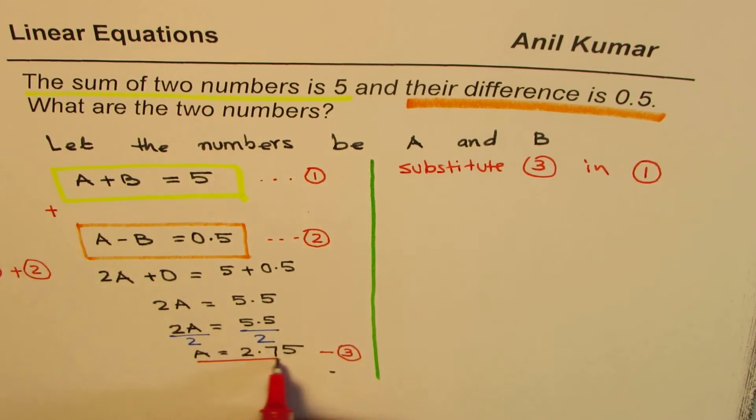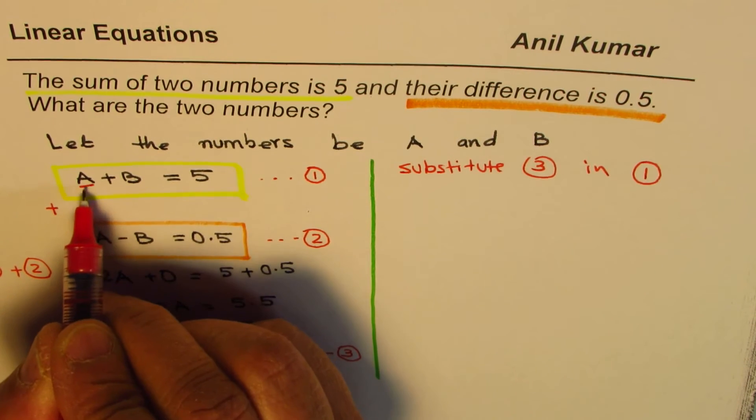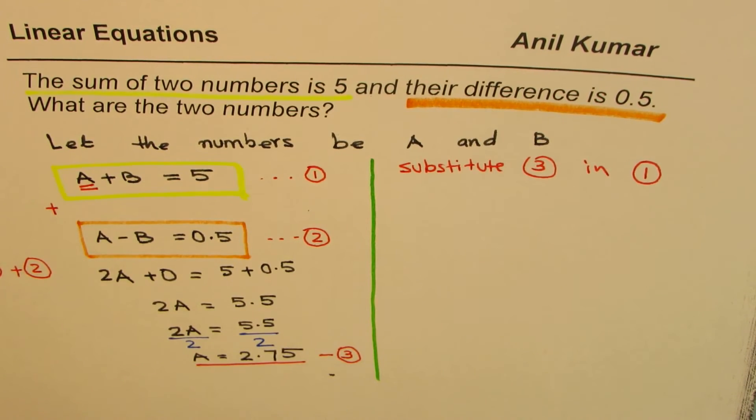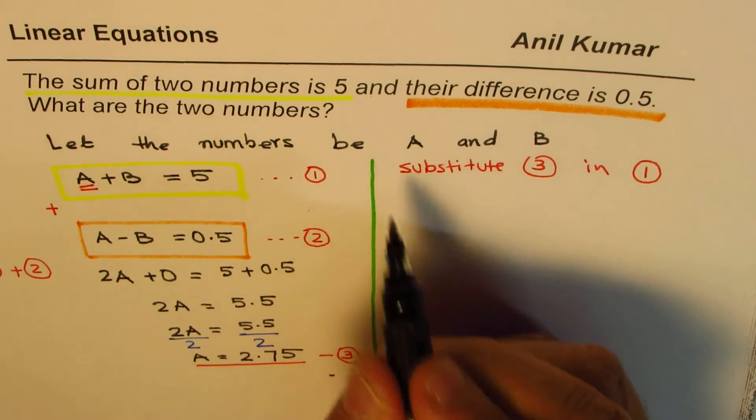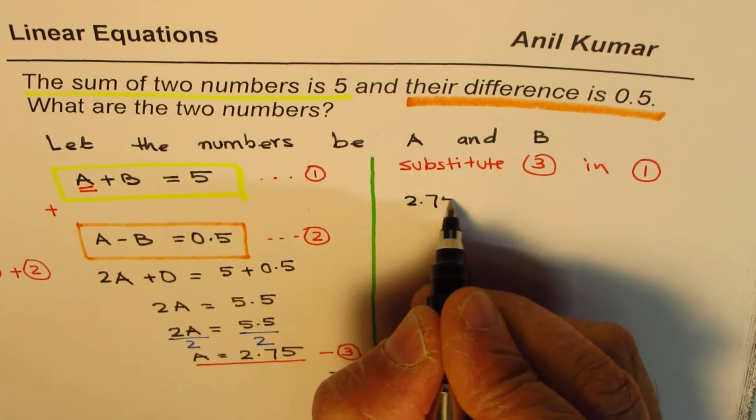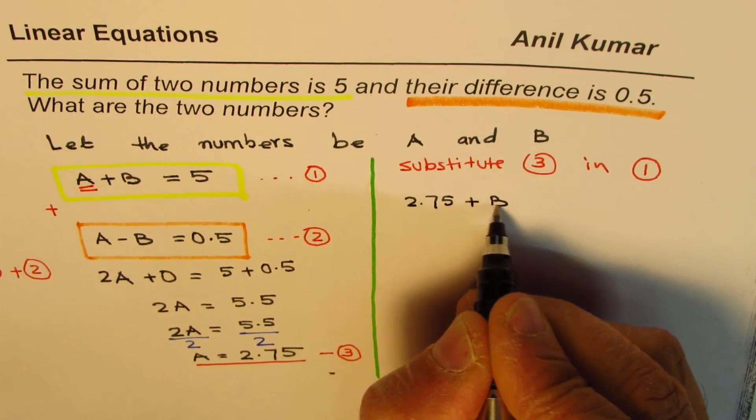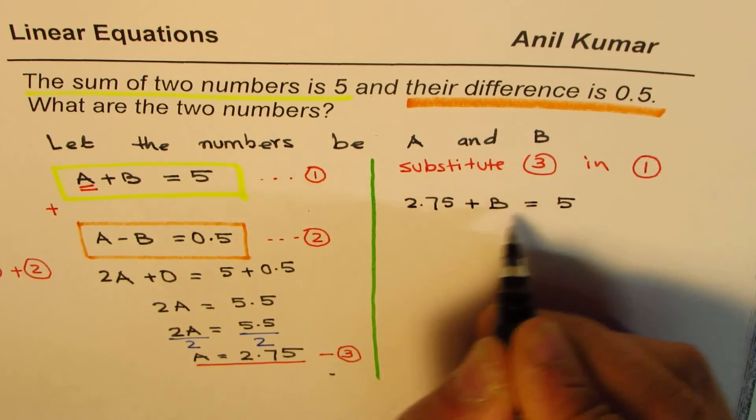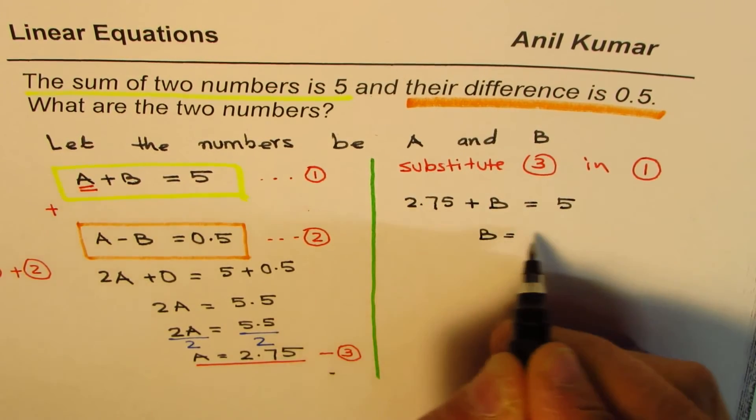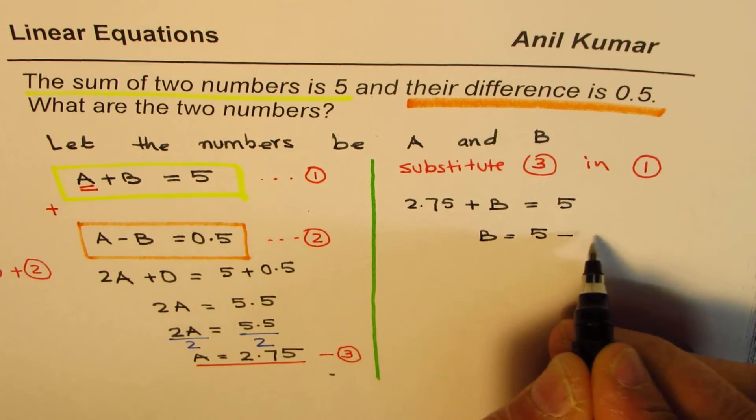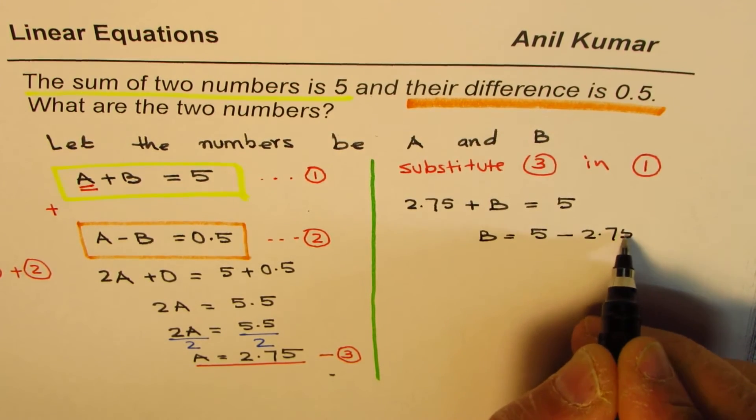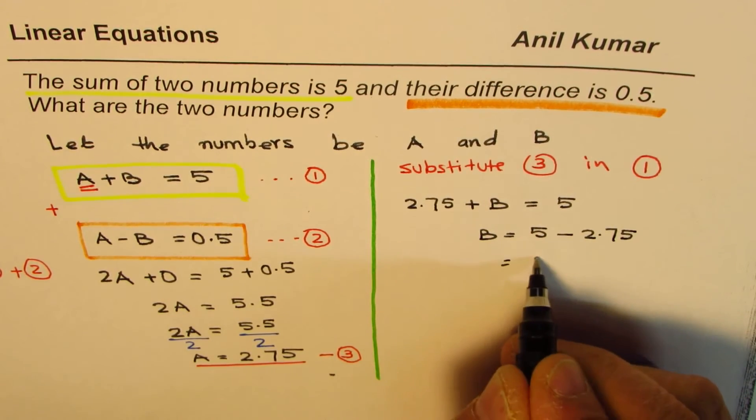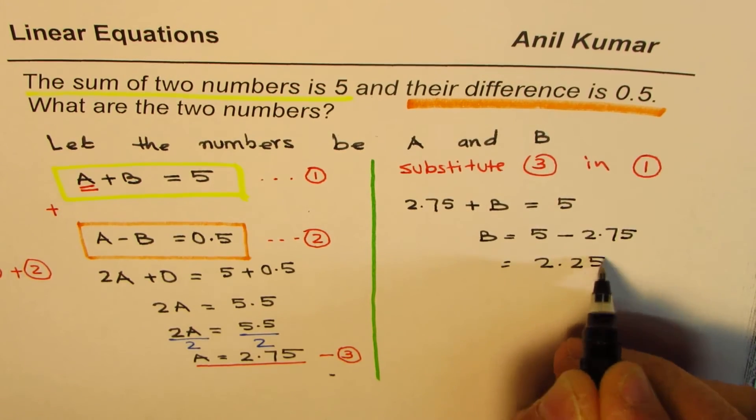I'll write it here in 1. So what I get here is 2.75 plus B equals 5. And therefore, B should be equal to, I can take away 2.75, so 5 minus 2.75. And when we do that, we get 2.25 as the result.